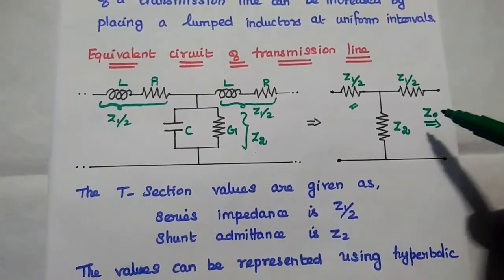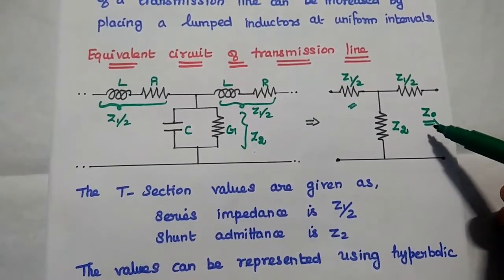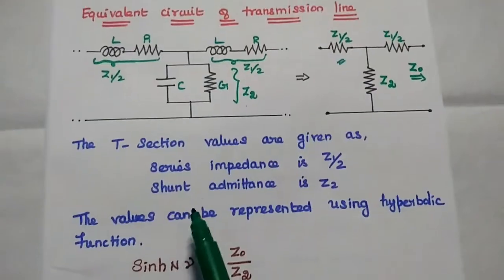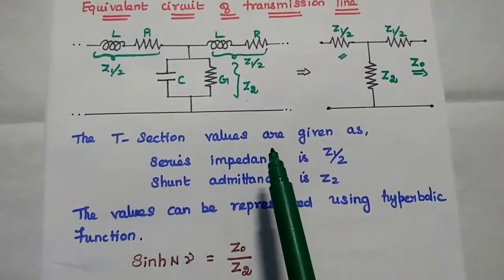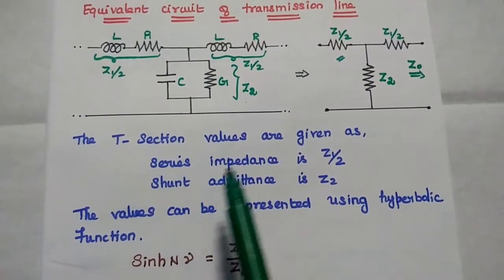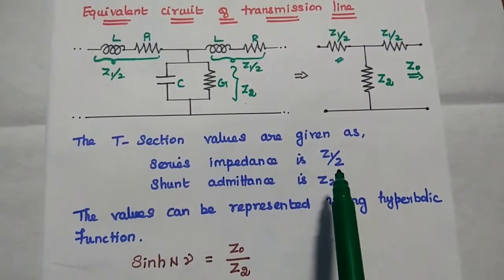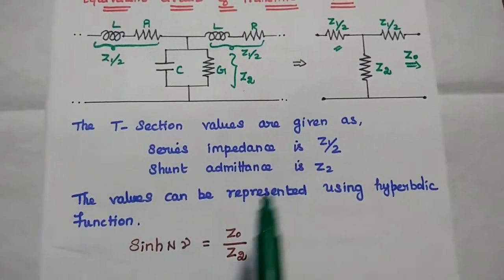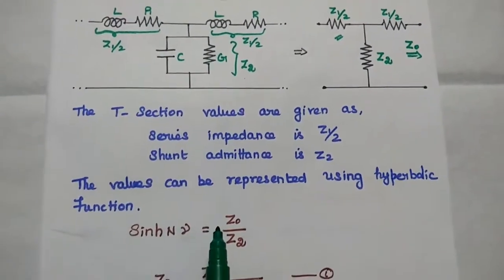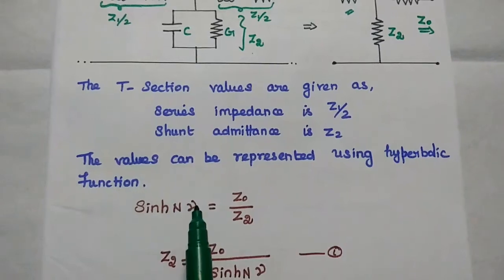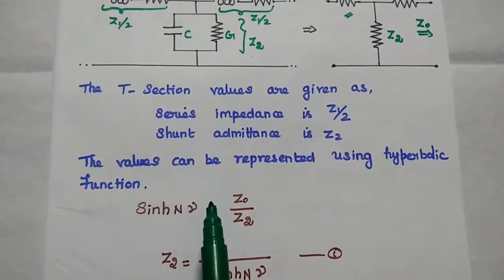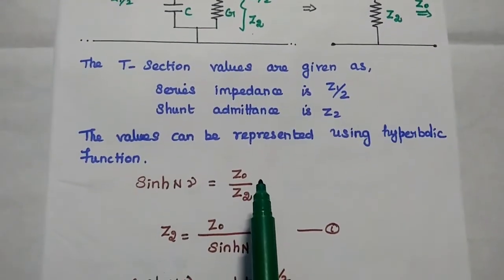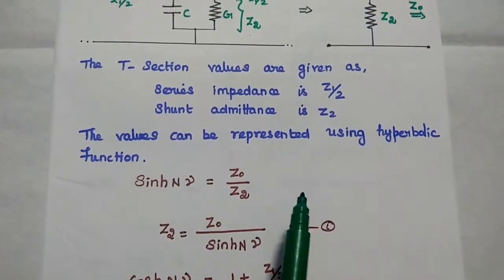Z0 is the characteristic impedance of the transmission line. The T-section values are given here: series impedance is Z1 by 2, and shunt impedance is Z2. Next, we are going to define the values of this series impedance and shunt impedance using hyperbolic functions.